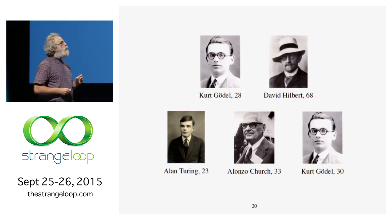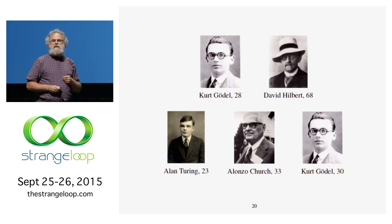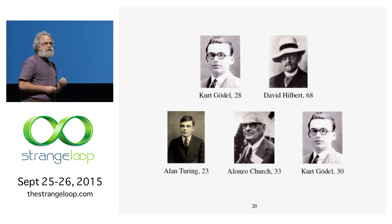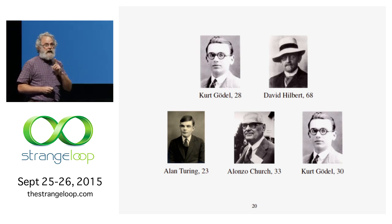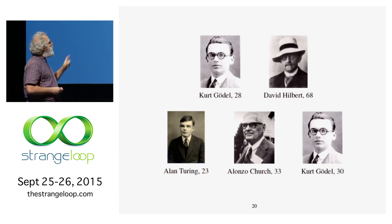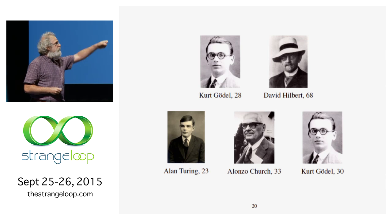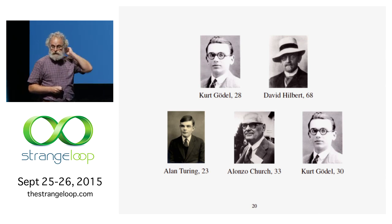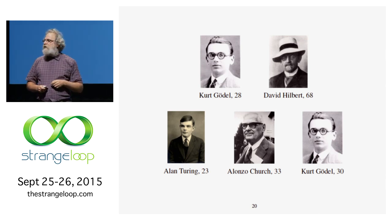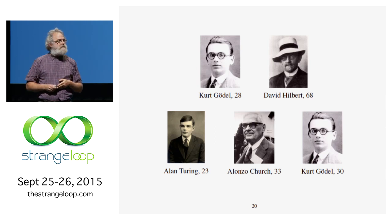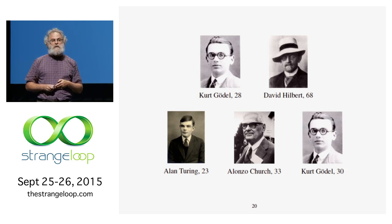Kurt Gödel was 28 when he undermined the work of David Hilbert. Alan Turing was 23 — still an undergraduate — when he undermined the work of Alonzo Church, who was 33, and Kurt Gödel, who was then an ancient 30. So, to all you young people in the audience, please keep explaining to your elders when we are wrong.